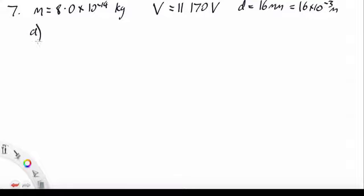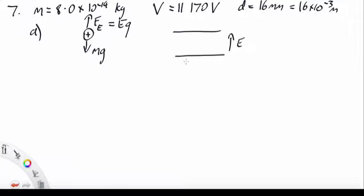So part A: we've got the gravitational force pulling downwards and the electric force, electrostatic force pushing upwards, which equals E Q. Now, it's a positive charge on that drop, so the magnetic field must be pointing upwards for the force to be in the same direction.